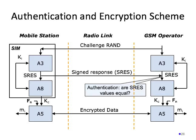Now what happens is that the session key is used to encrypt the data. A5 is a stream cipher — we've seen examples of stream ciphers before, for instance in WPA. With the stream cipher, there is something very similar to an initialization vector. Here, this is labeled F_N, or frame number. In this way, A5 produces a different key stream for each different frame.